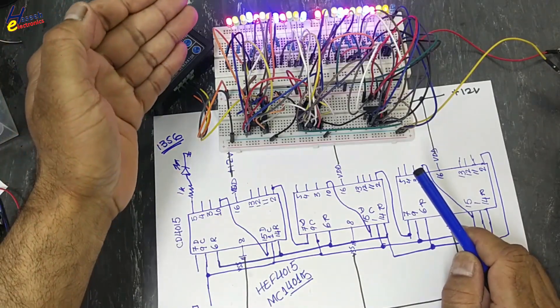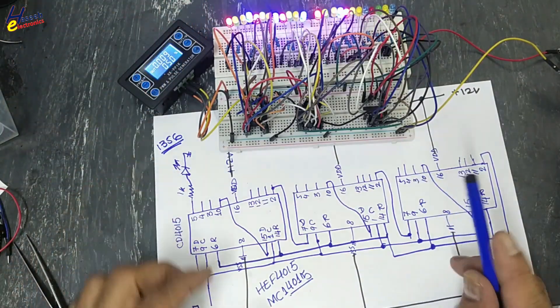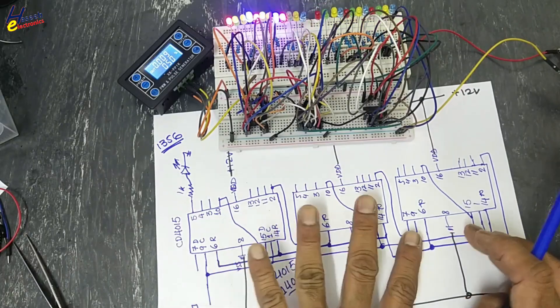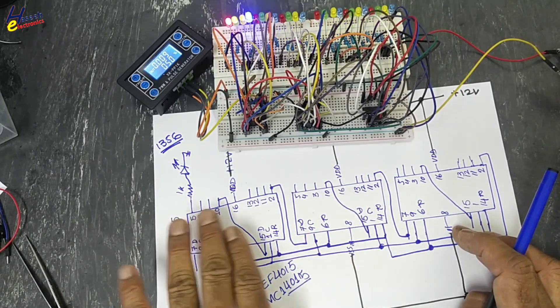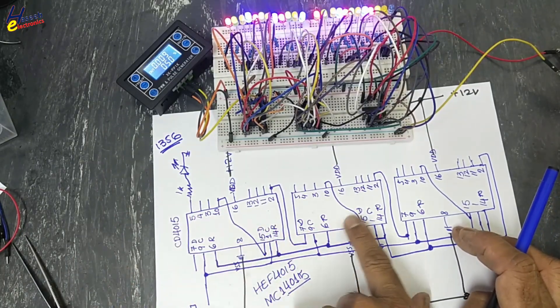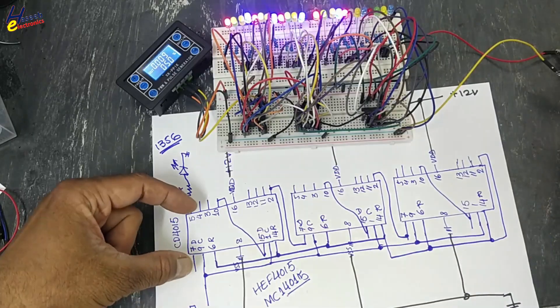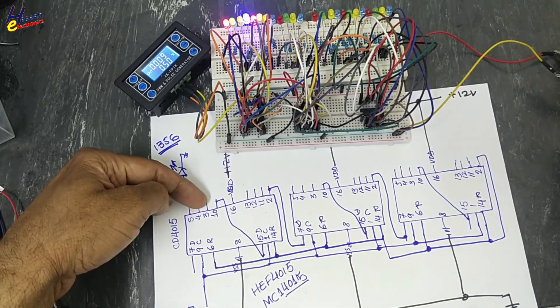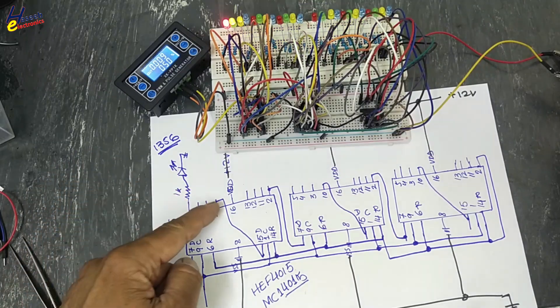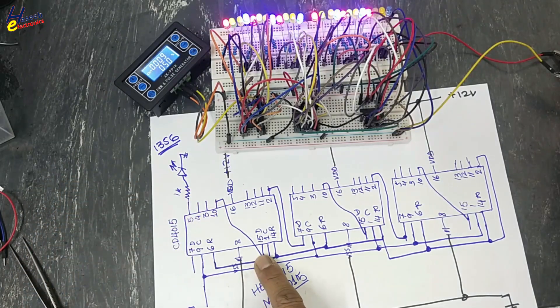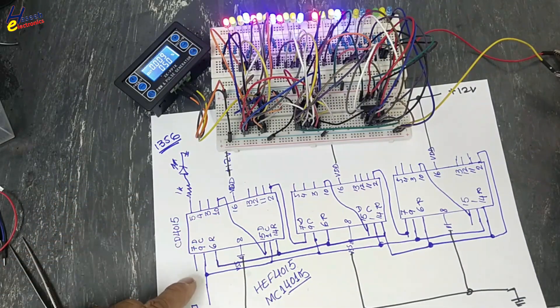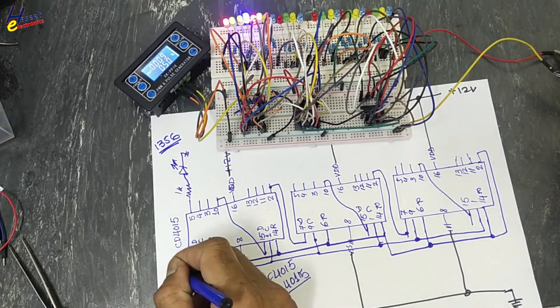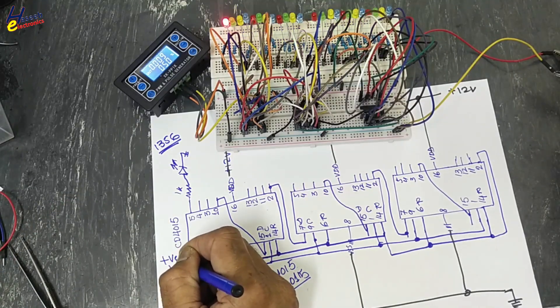It is serial fill register. We used CD4015 three ICs. We cascaded all ICs together so when one segment from first IC will complete its four LEDs, four outputs, then it will enable the next pin. In this situation, we collected data pin, pin number seven of first IC to positive VDD.